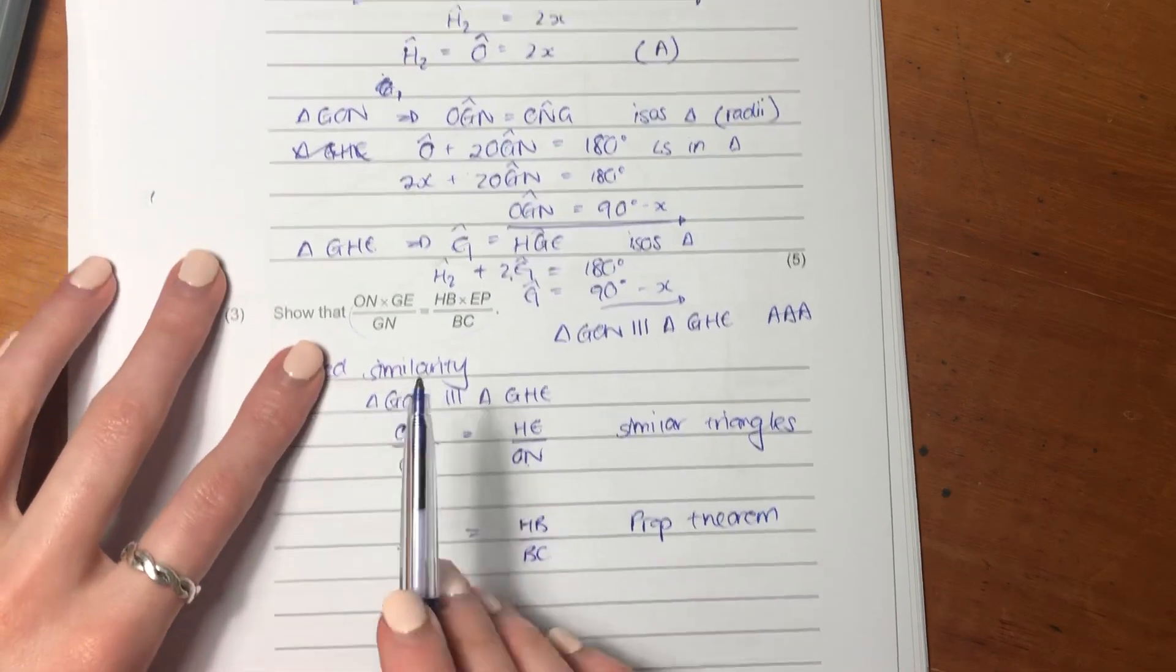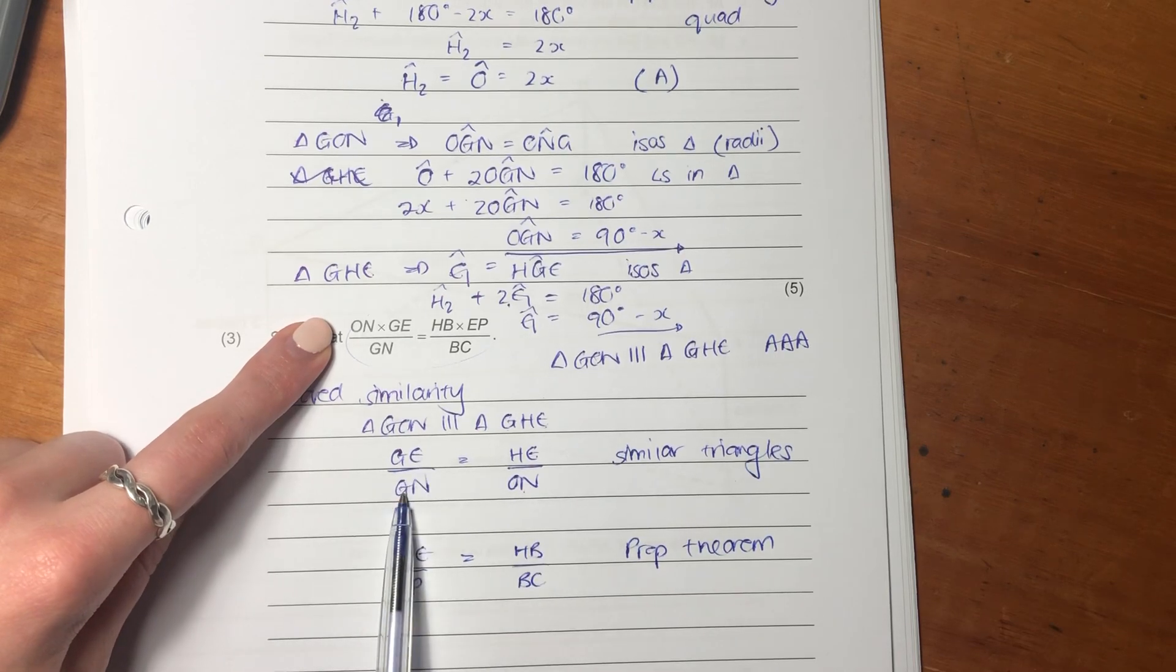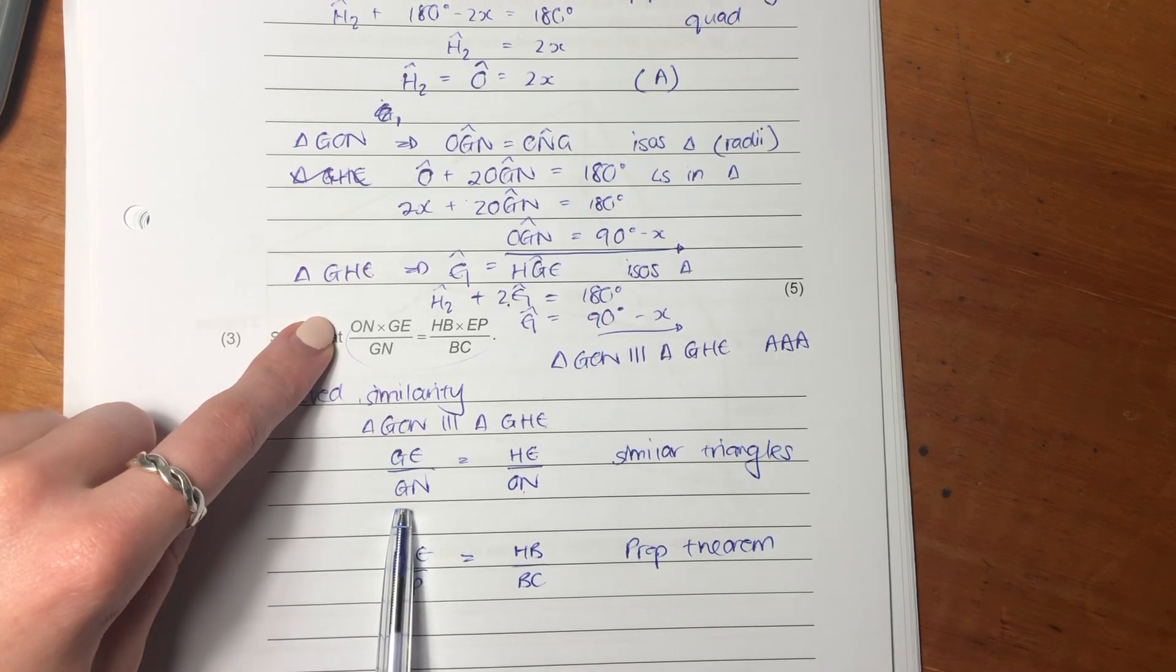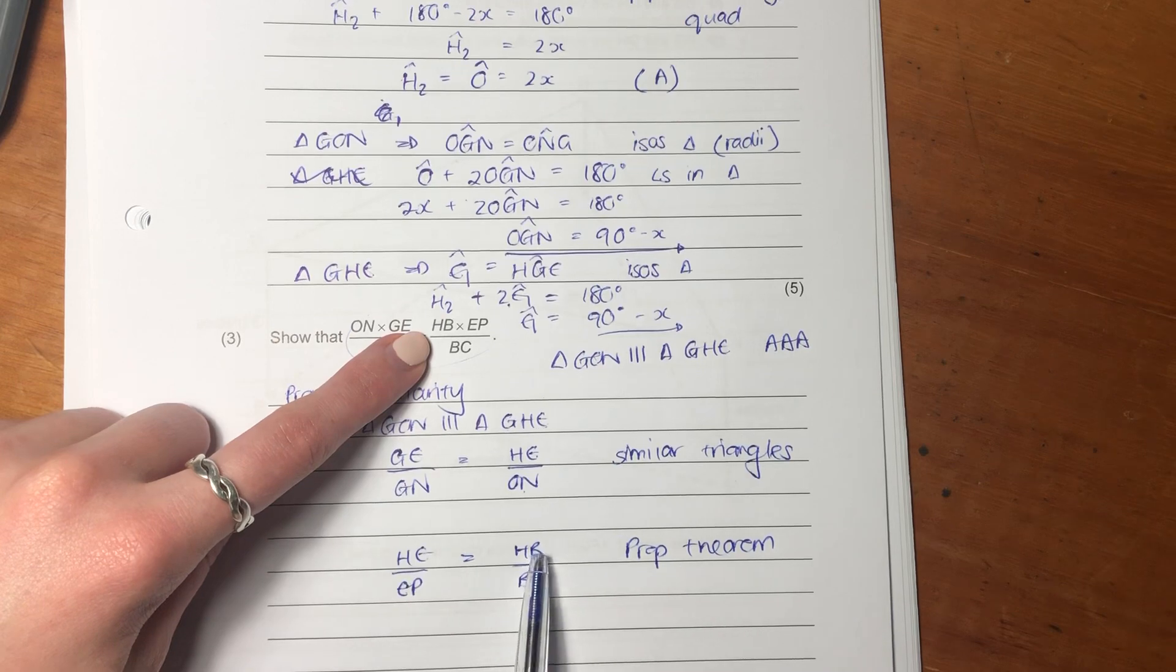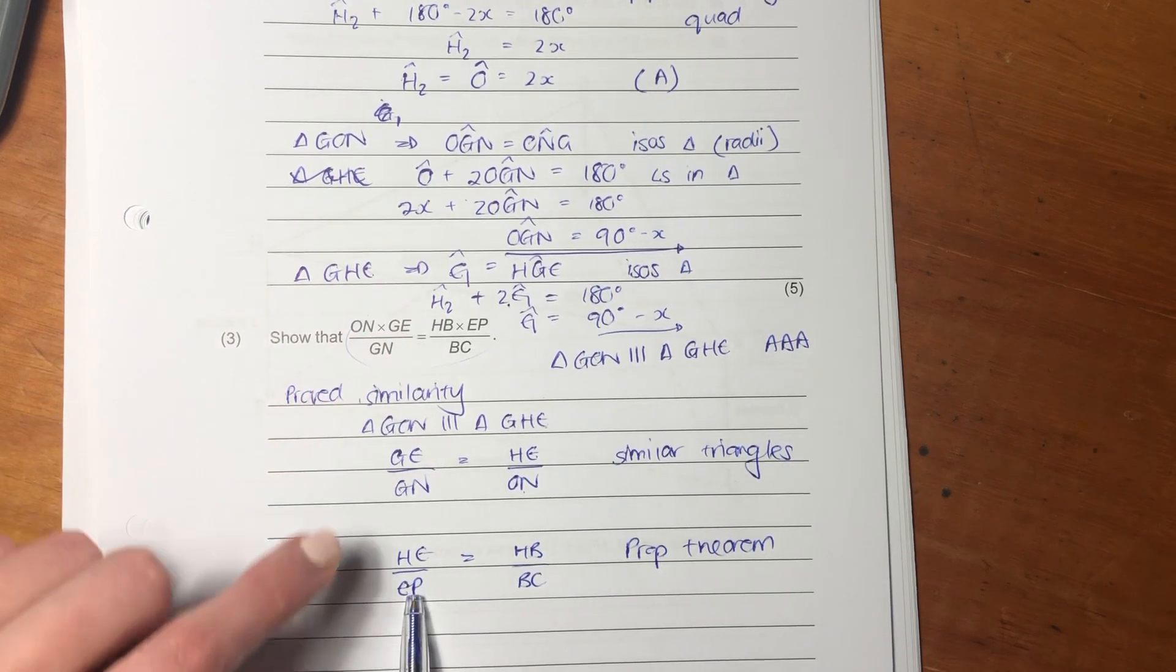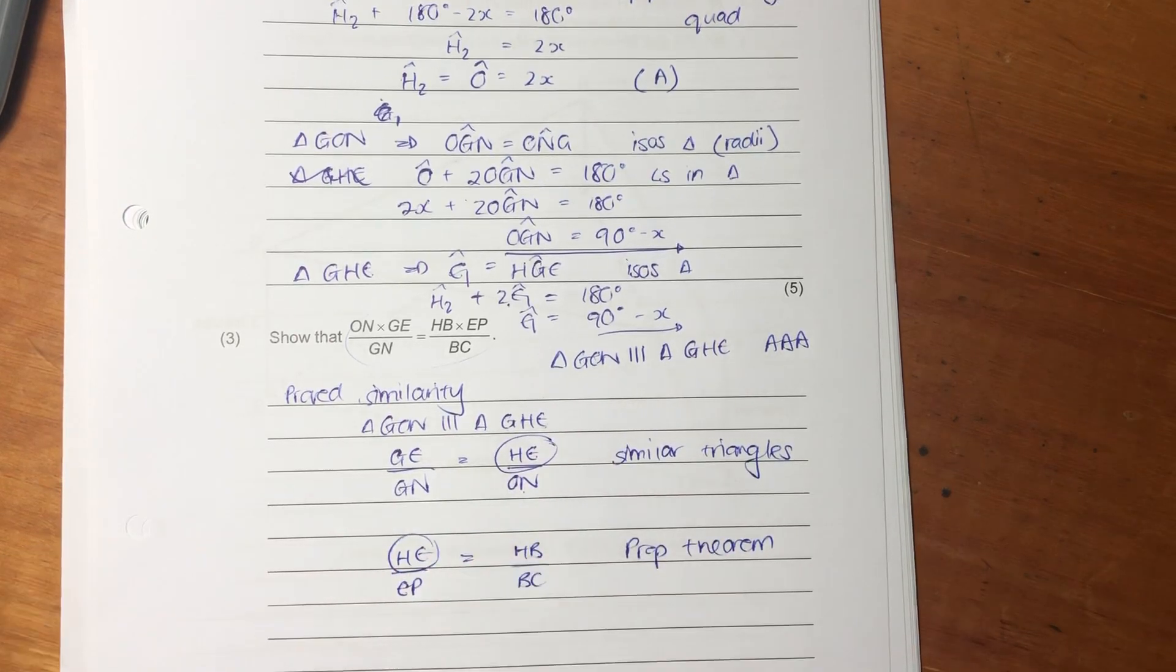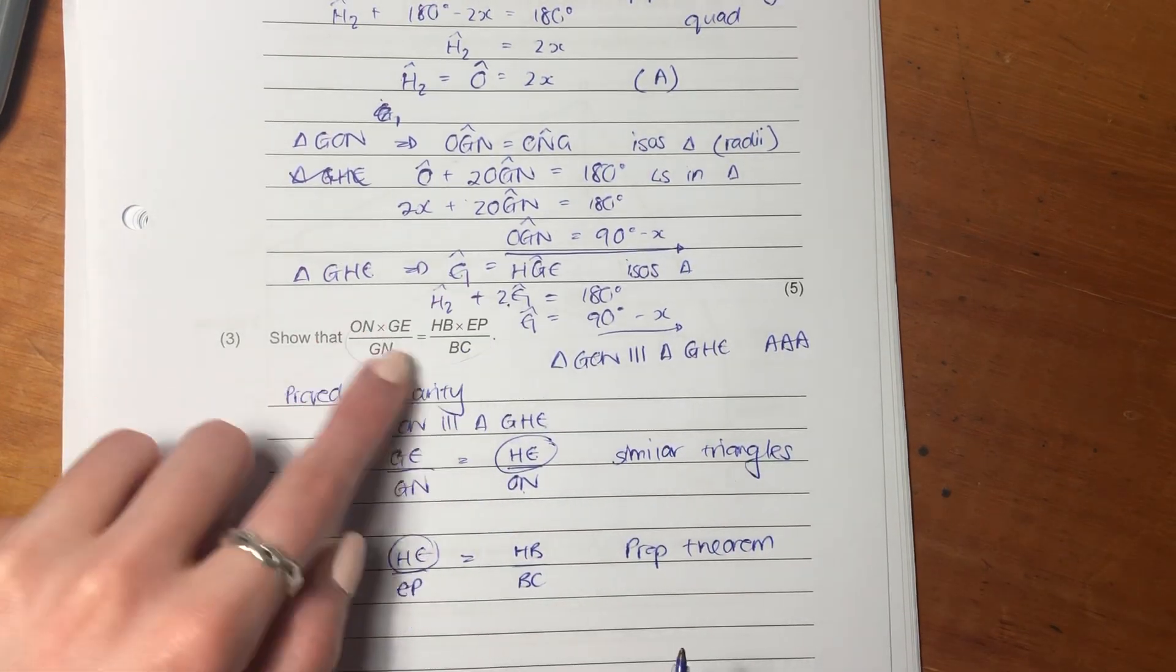So now let's see if we've got all the inputs that we want. We've got O-N, we've got G-E, we've got G-N. Then we have H-B, B-C, and we have E-P. So here we have two H-E's. But we don't want any H-E's in our final answer.